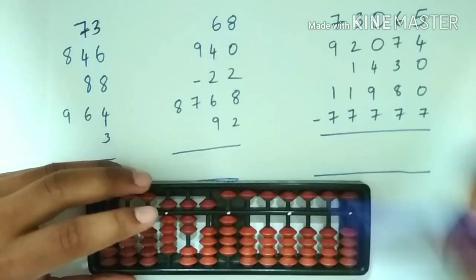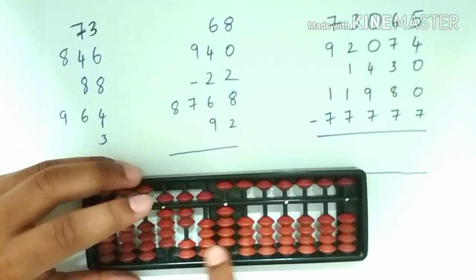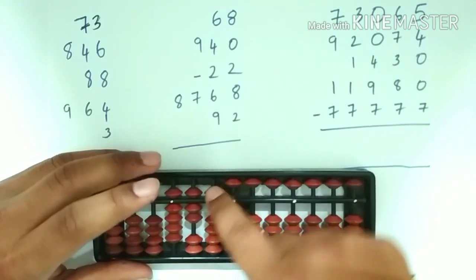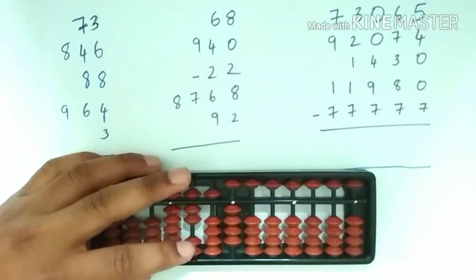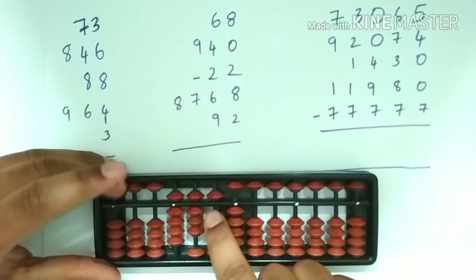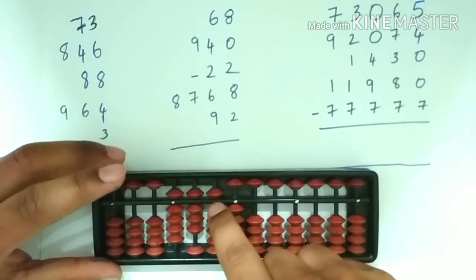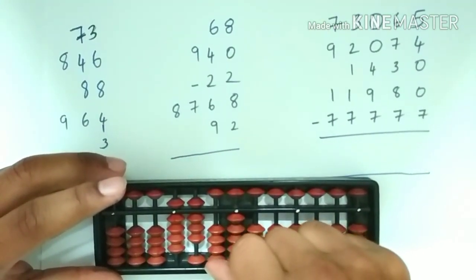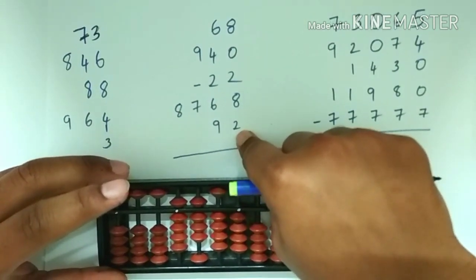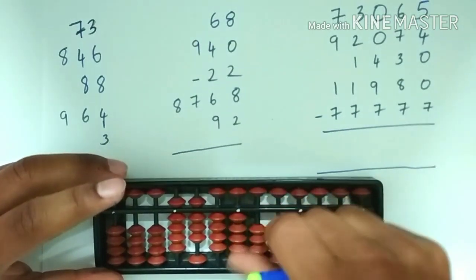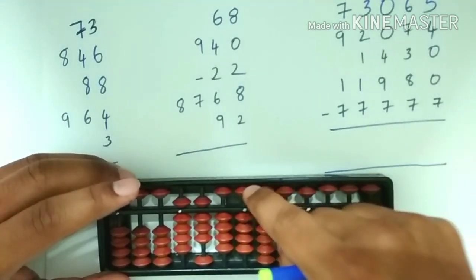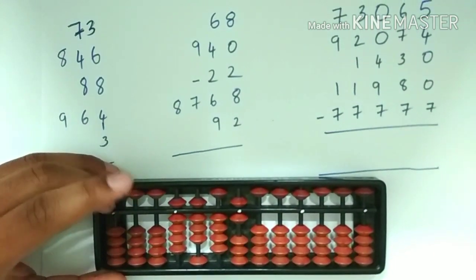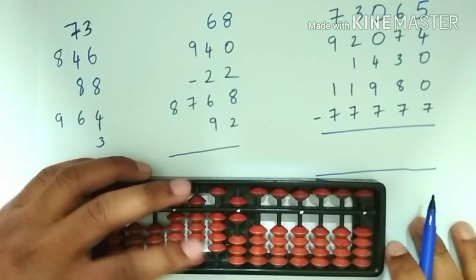Now add 92. To add 92, which is a 2 digit number, we will have to place from the 10th rod. To add 9 on the 10th rod, we see that 5 is there, so we have to use lazy friends concept — add the friend 10 and less the friend 1. To subtract 1 from the 10th rod we will have to use small friend subtraction — less the friend 5 and add the friend 4. Now to add 2 on the unit slot, we will have to use small friend addition — add the friend 5 and less the friend 3, because 3 is the friend of 2 in small friends. We got the final answer as 9846.